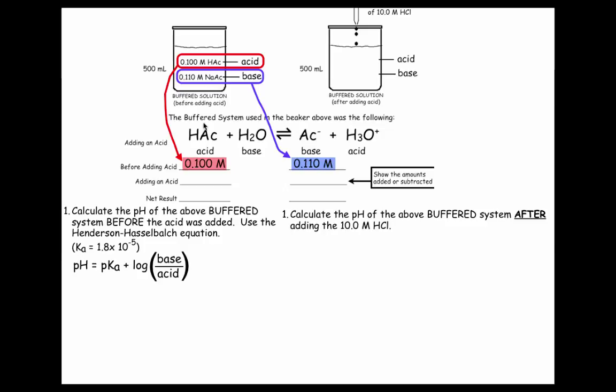To calculate the pH, which we're going to do here, before any acid was added. Well, since we have a conjugate acid-base pair, we use the Henderson-Hasselbalch equation, so let's start plugging in. pH is negative log of 1.8 times 10 to the minus 5. Well that's the Ka. Remember, the letter p means negative log, plus the log of the base divided by the acid.